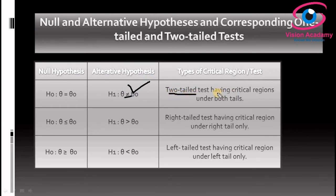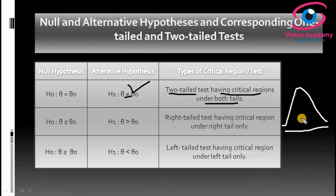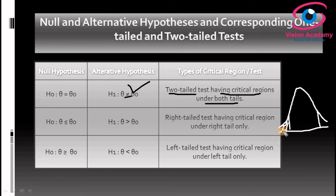If your alternative hypothesis has a 'not equal to' symbol, you must go for a two-tailed test. The two-tailed test has critical regions under both tails. In this case, the rejection region will fall on both sides of the sampling distribution. So to decide whether to reject the null hypothesis, you must follow the rejection region in the tailed test.